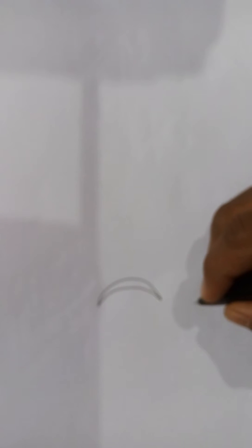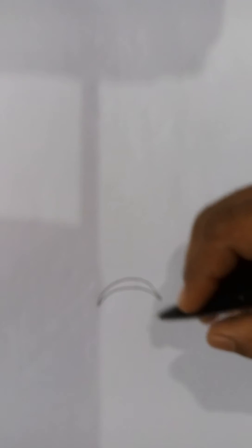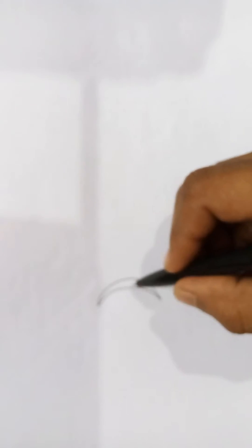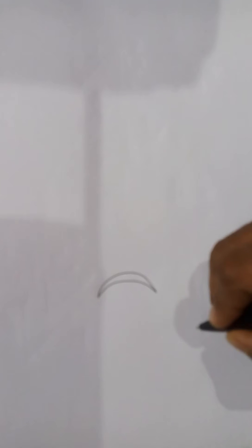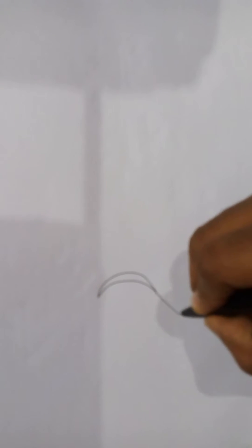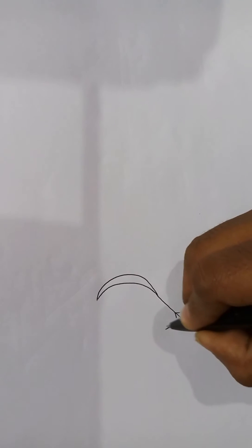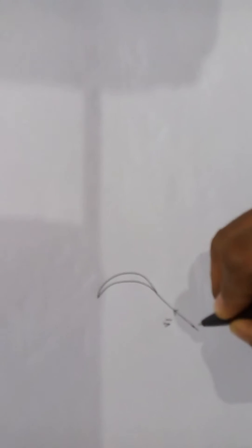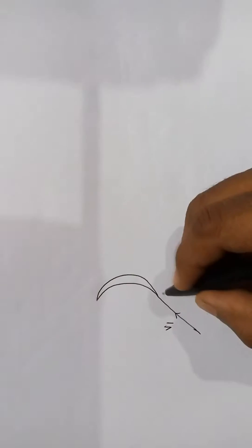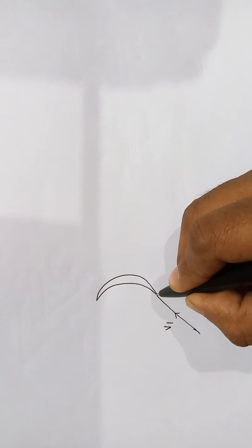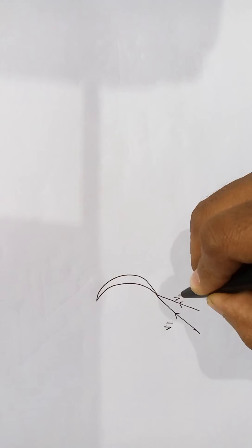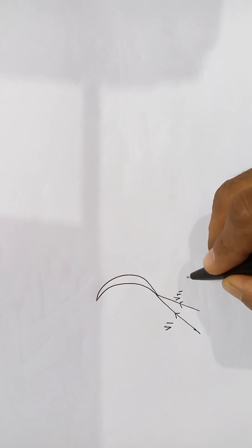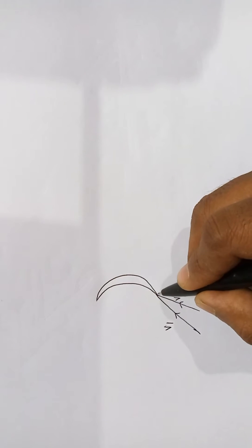In this video I will show how to write velocity triangles very easily. Here I am considering a symmetrical blade, that is a moving blade. The fluid coming from the nozzle or reflex blade is having a velocity of V1, that is the absolute velocity. Once it hits the moving blade, its velocity changes to Vr1, that is the relative velocity with respect to the blade at the inlet.